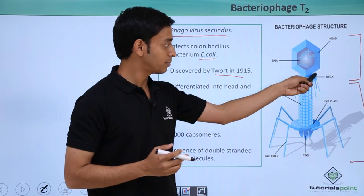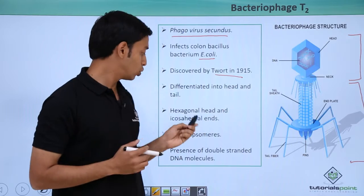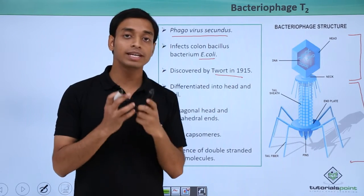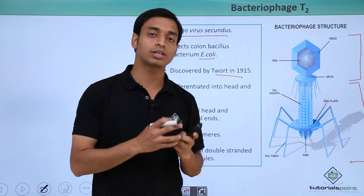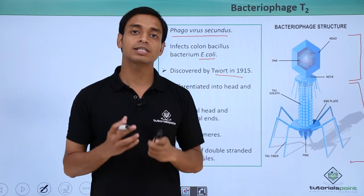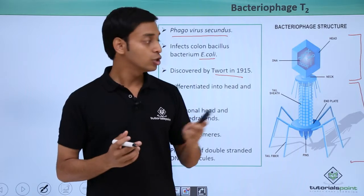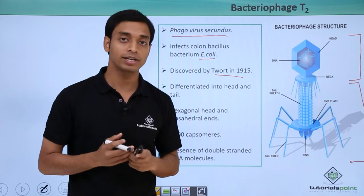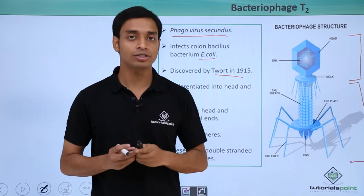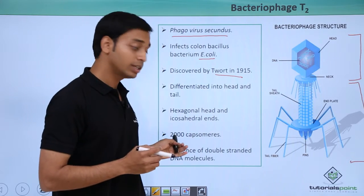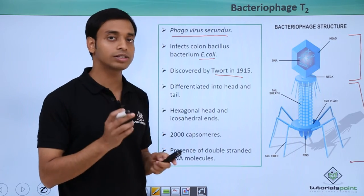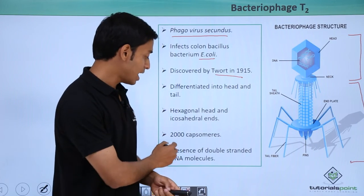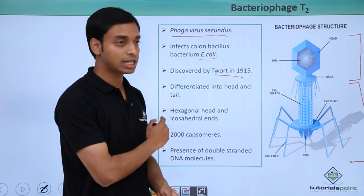The head is hexagonal, meaning it has six sides, and it also has icosahedral ends. These are formed by protein capsomeres. These capsomeres give an icosahedral type of appearance to bacteriophage T2. These viruses have got about 2,000 such capsomeres which give this icosahedral structure-like appearance.